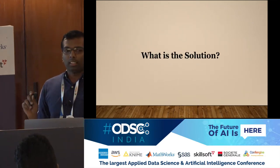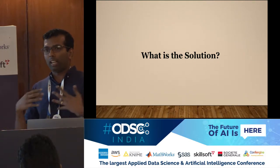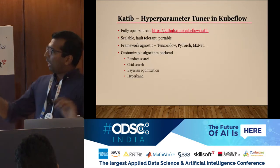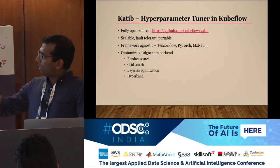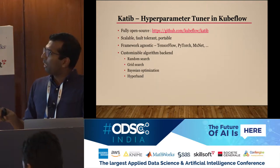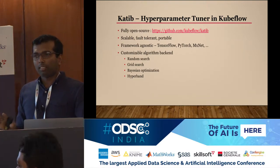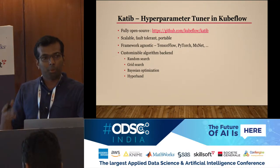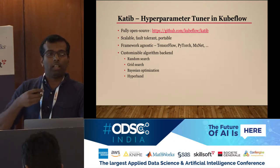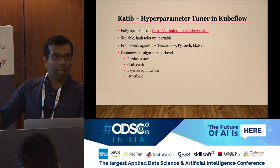That is where this presentation becomes important — we need a scalable machine learning hyperparameter optimization tool. This is called KATIB, and it is in the Kubeflow ecosystem. It is fully open source, completely Kubernetes native, so you get all the advantages Kubernetes provides to applications. It is scalable, fault tolerant, and portable — it can run on any environment where you have Kubernetes.